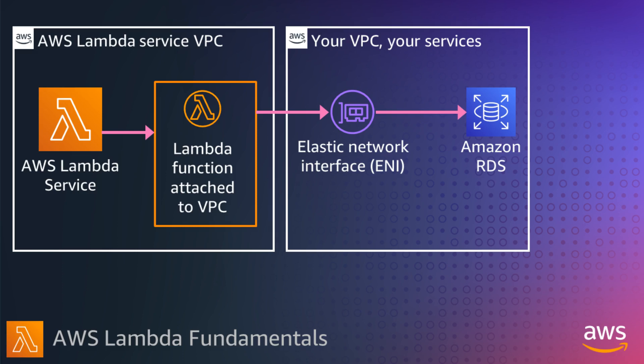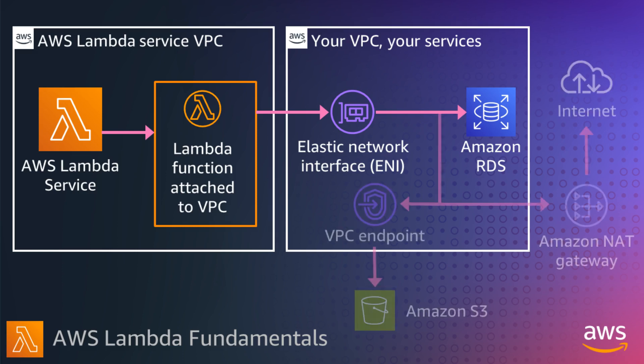Your functions continue to run inside of the Lambda service VPC. You still don't have direct network access to the execution environment and can now only access resources over the network through your VPC. You manage the function's internet access and network connectivity with VPC resources. You can set up a NAT instance or an Amazon NAT gateway. You can also use VPC endpoints to enable private communications between your VPC and supported AWS services. AWS Lambda supports VPC endpoints itself, so if you need to access Lambda from your VPCs, you can do so.